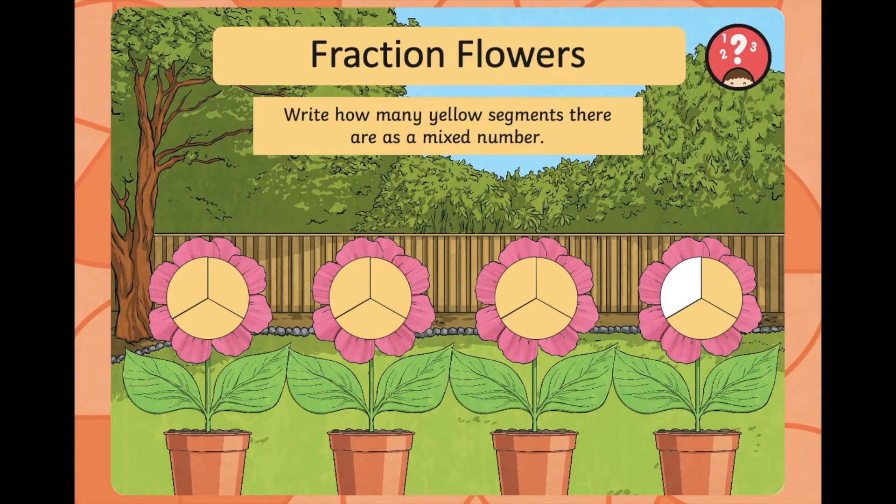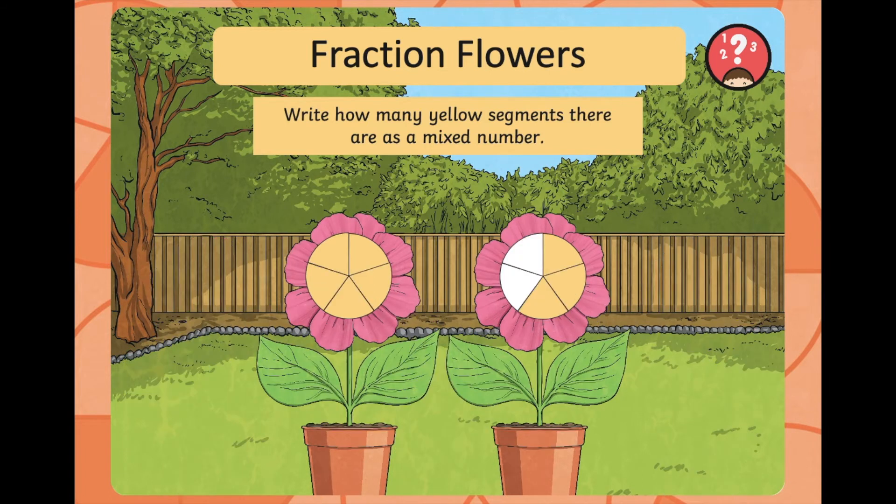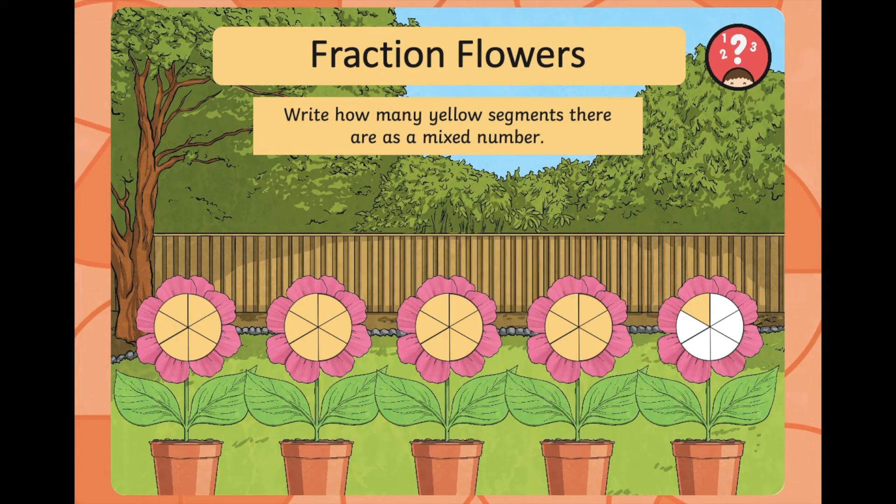Next one. How many yellow segments are there here as a mixed number? Hopefully you got that there are three and two thirds. Three holes are filled in and two thirds. Next one. Hopefully you saw here that there's one and three fifths filled in. Well done if you've got all of these correct so far. This next one. And that is four and one sixth.